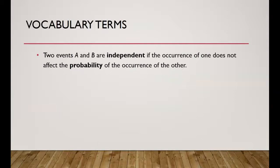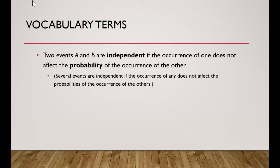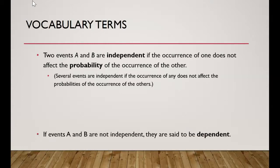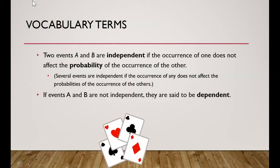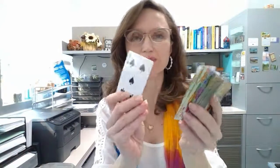Two events are considered independent if the occurrence of one does not affect the probability of the other. Several events are independent if the occurrence of any does not affect the others. If events A and B are not independent, they are said to be dependent. For example, consider randomly selecting two cards from a deck — there are four suits: clubs, hearts, diamonds, and spades, with 52 total cards.